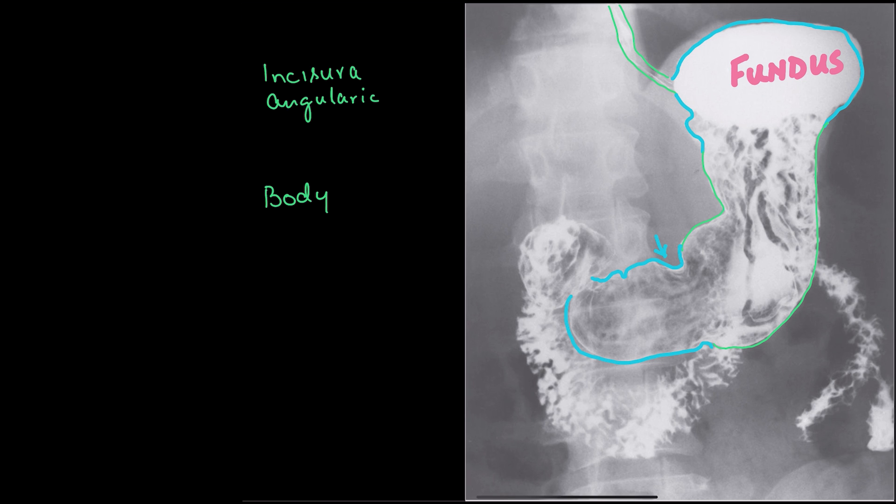You can very easily highlight the rugae and you can see these rugae are present in the body of my stomach and they are very nicely visible within this contrast study. This is the pattern of the rugae which has been widely scattered all across the lumen of my stomach.